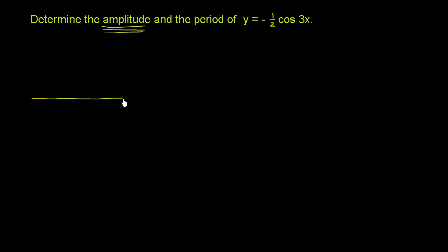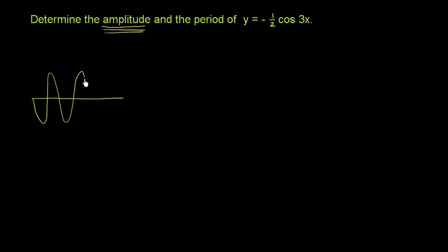If I were to draw a periodic function, it goes back and forth between two values like that — between that value and that value. You take the difference between the two, and half of that is the amplitude. Another way of thinking about the amplitude is how much does it sway from its middle position?